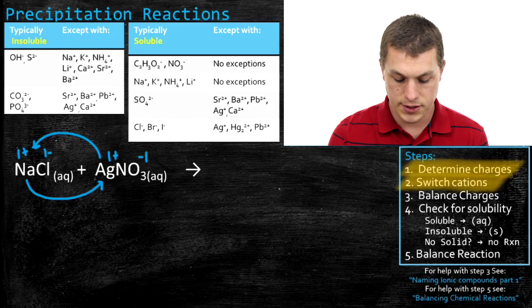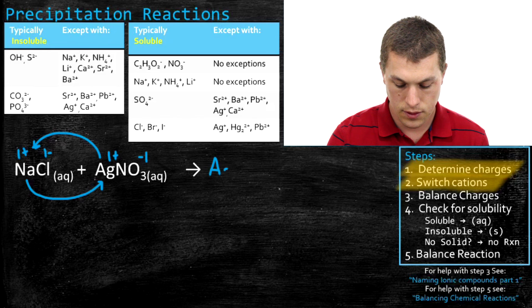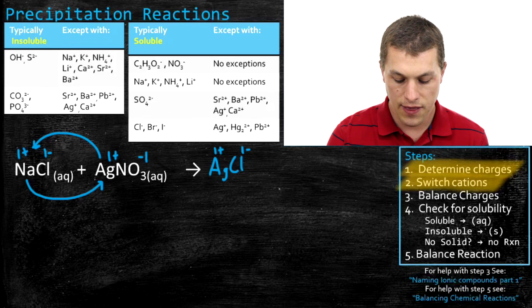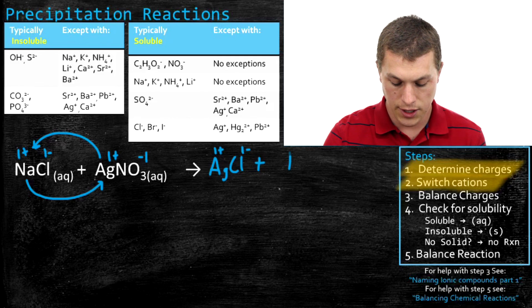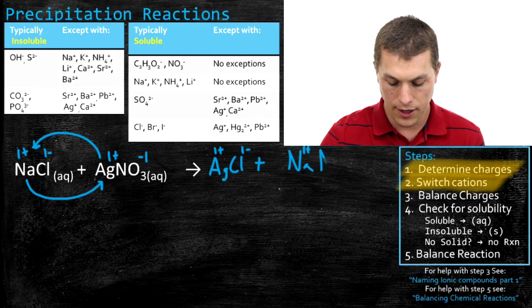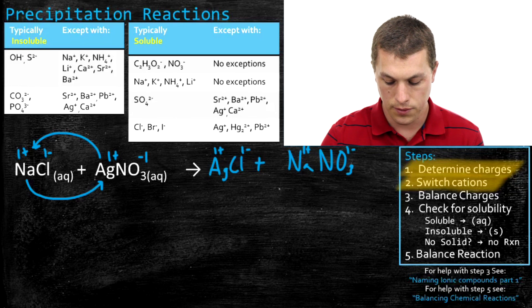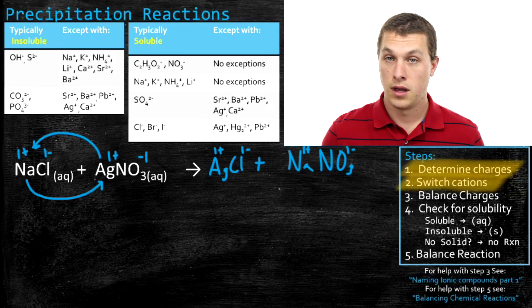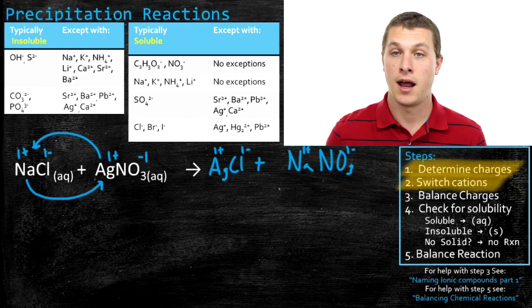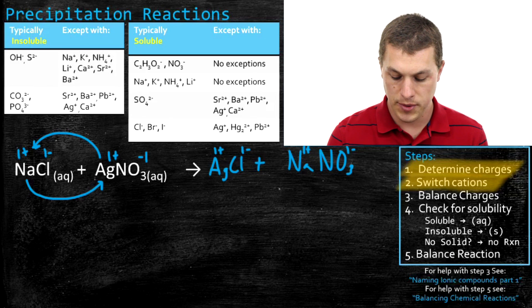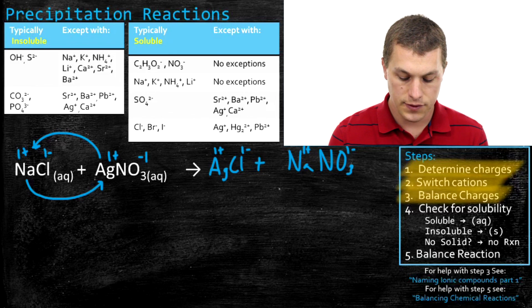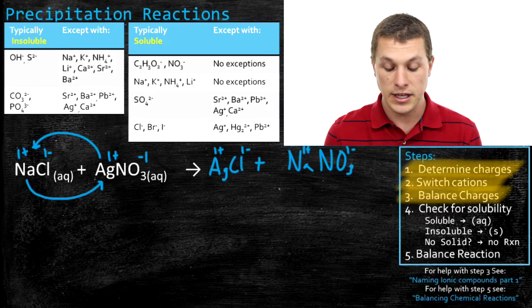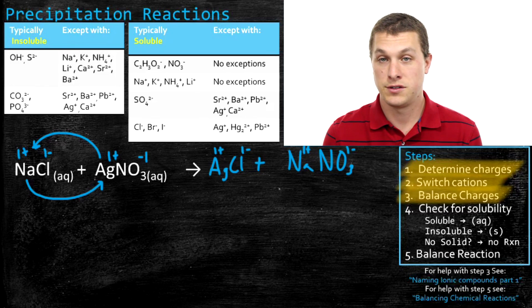That gives us silver chloride on the other side — the charges just carry over, so chloride is still minus one and silver is still plus one. Then when we put sodium where silver was, we get sodium nitrate, with sodium still plus one and nitrate still minus one. Now that we've switched the cations, we've written out the products with the cations flipped. Next, step three, we balance the charges to make sure the compounds are neutral. Silver is plus one and chlorine is minus one — neutral. Sodium is plus one and nitrate is minus one — balanced. So we're done with that step.